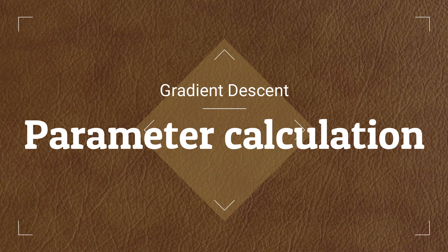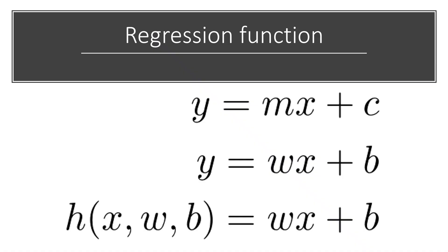Now I am going to explain the rationale behind my regression model. Consider the simple regression model y = mx + c, where x is the independent variable, y is the response variable, and c is the constant. You can rewrite this as y = wx + b, where w is the weight of the independent variable and b is the bias term. So the regression function h(x, w, b) = wx + b contains three parameters: the independent variable, the weight, and the bias.